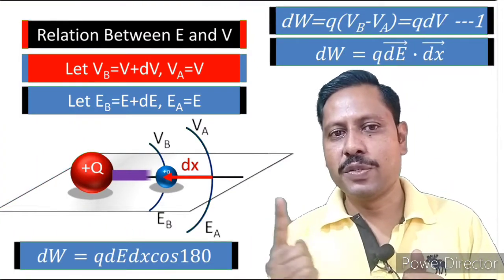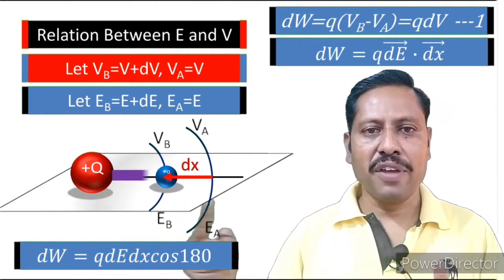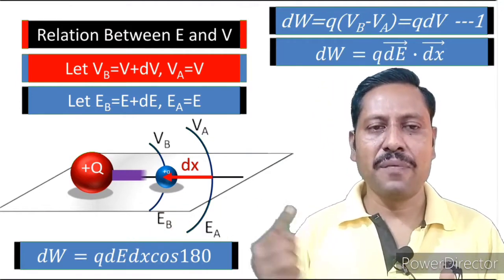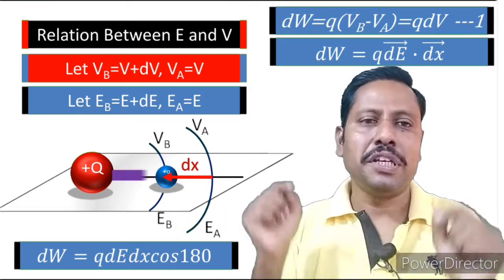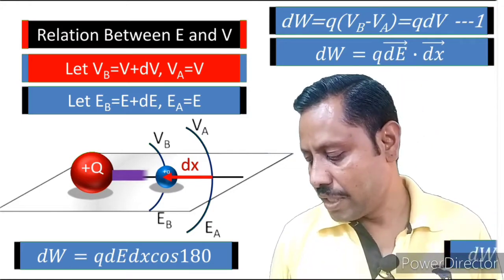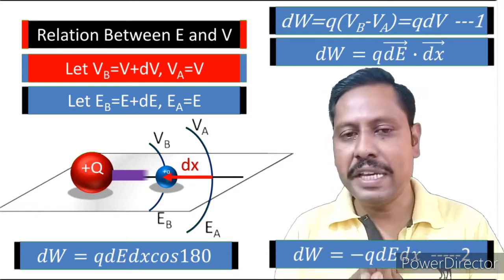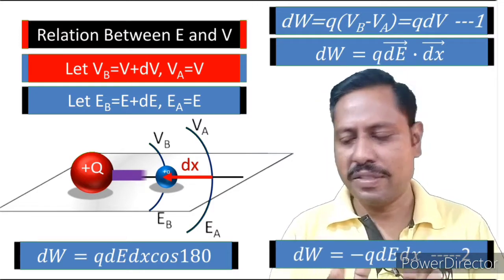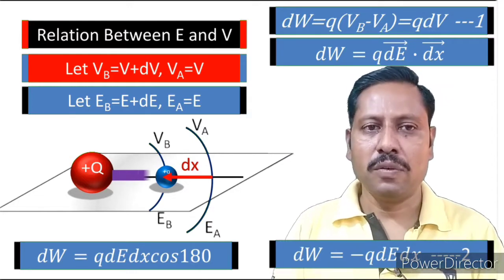Why is it 180? Because the displacement is towards the charge, and the electric field is away from the charge. Electric field is coming from the charge. That's why these two are opposite to each other, so the angle is 180 degrees. So this small work done becomes minus Q DE DX. This is also work done, and previously in equation one we also got the work done.